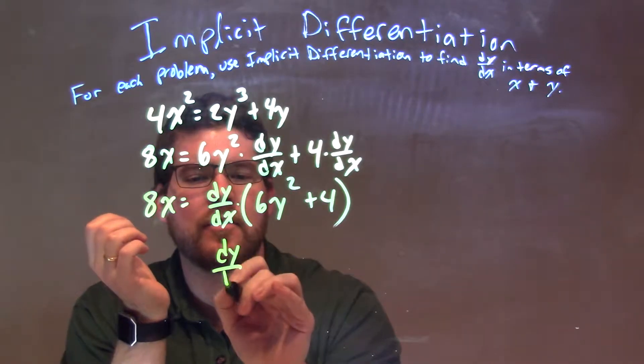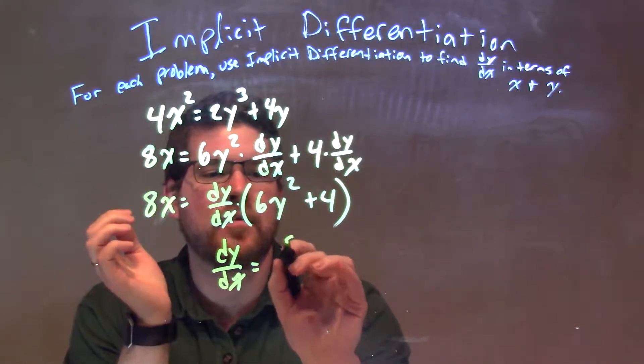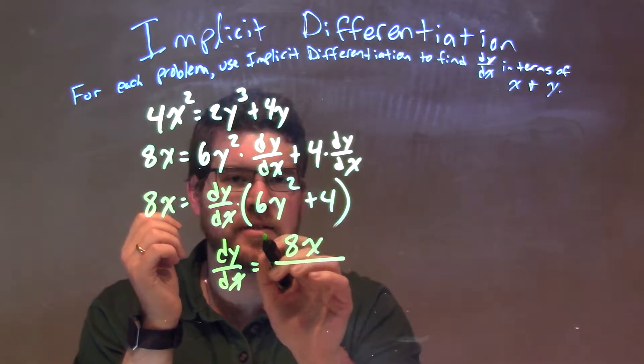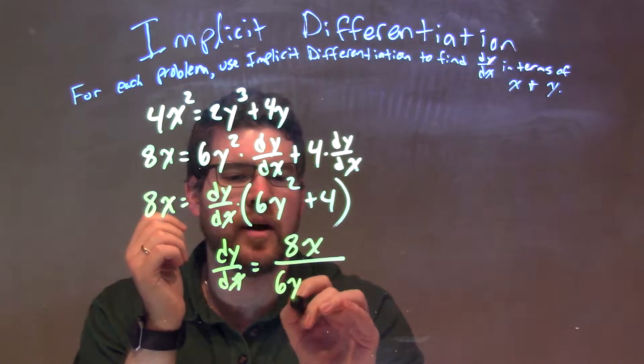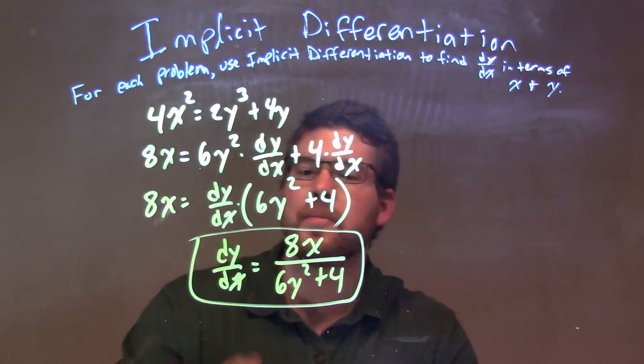So, I'm going to put dy/dx to the left now, and x up top, over what I'm dividing, 6y squared plus 4, and there we have it, our final answer.